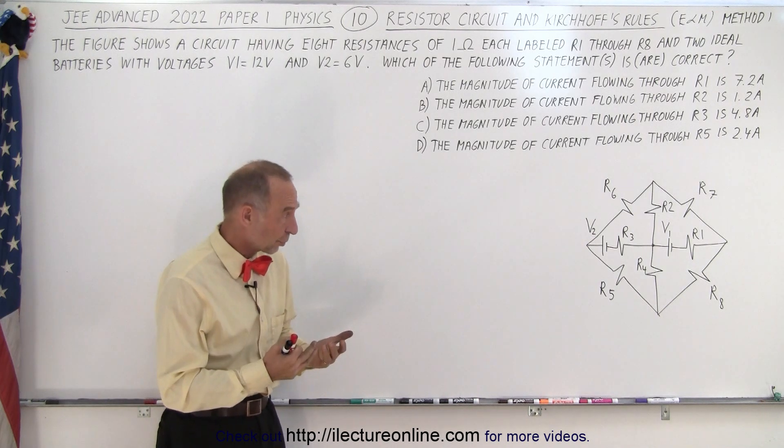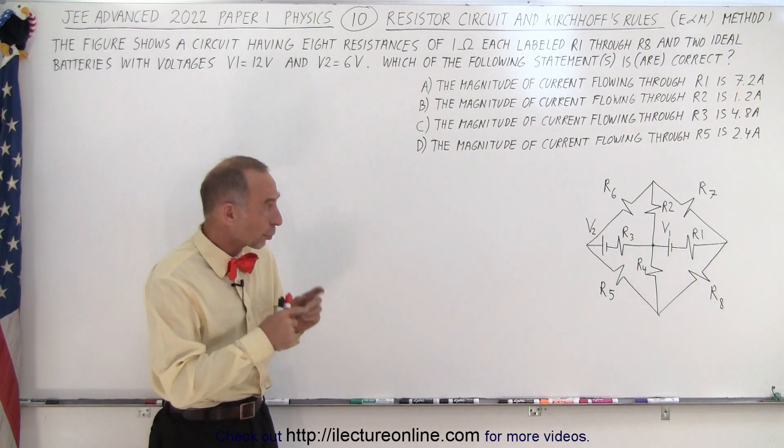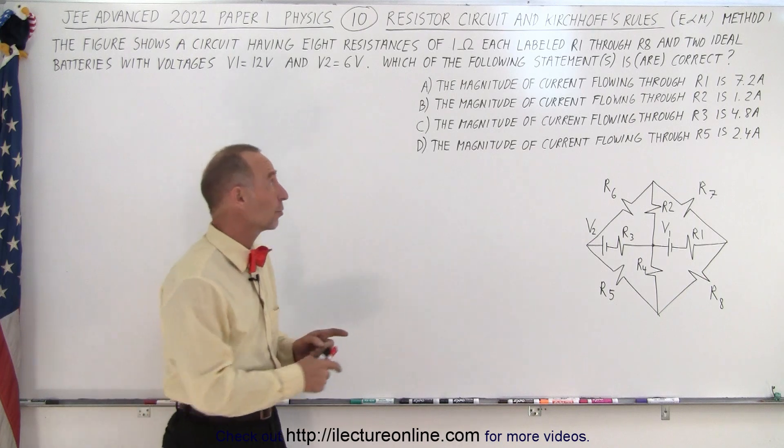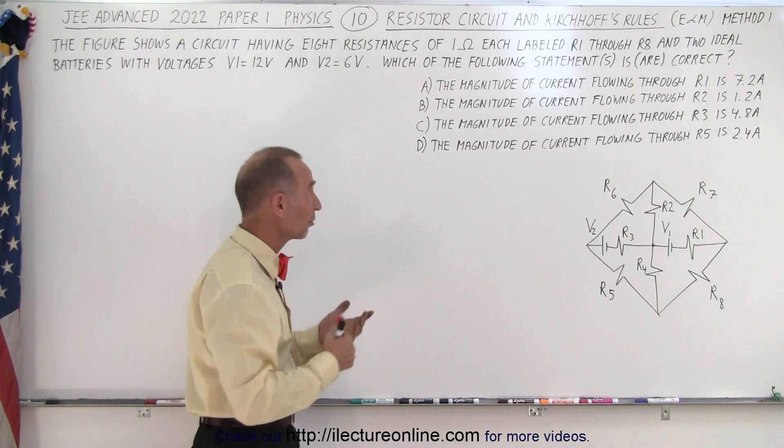It's a resistor circuit with two batteries and we need to find the current in all of those branches so that we can answer whether or not these four statements are correct or not.